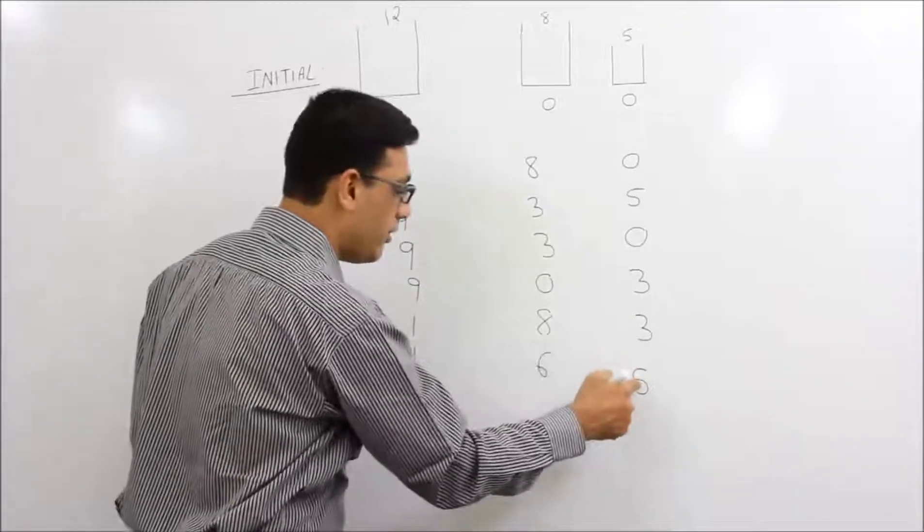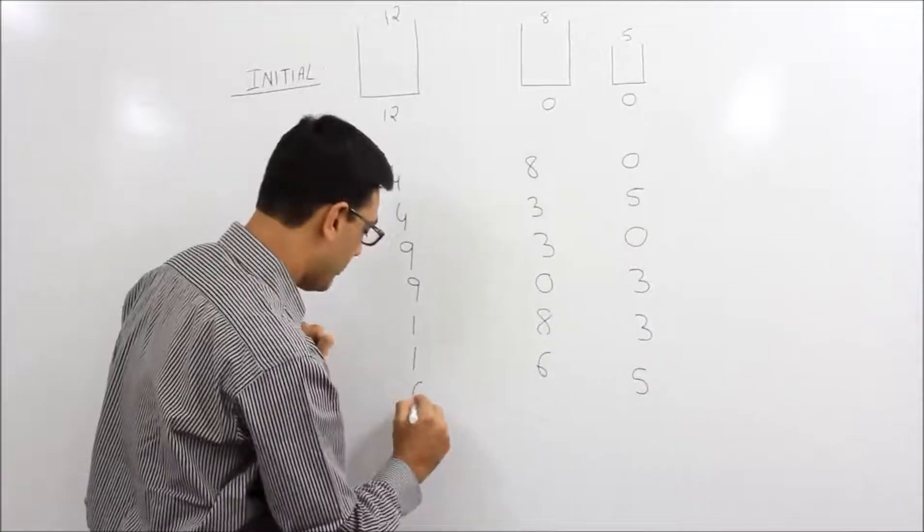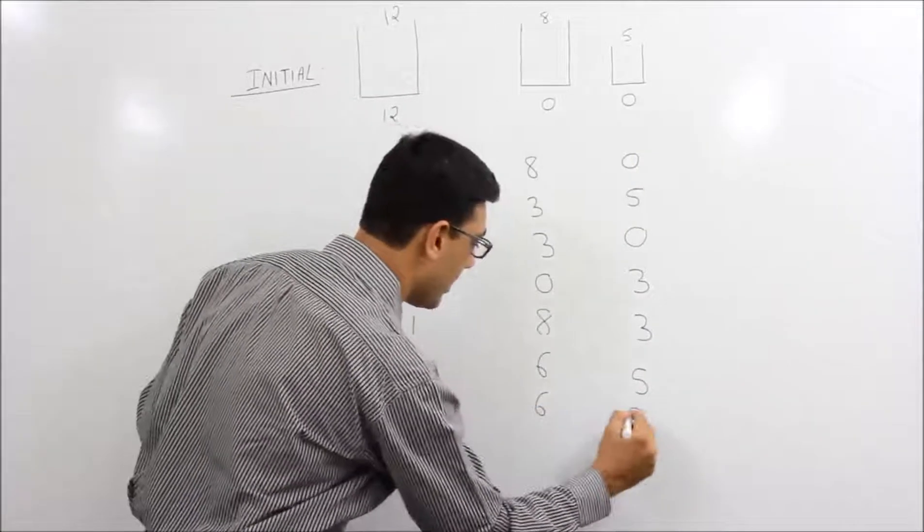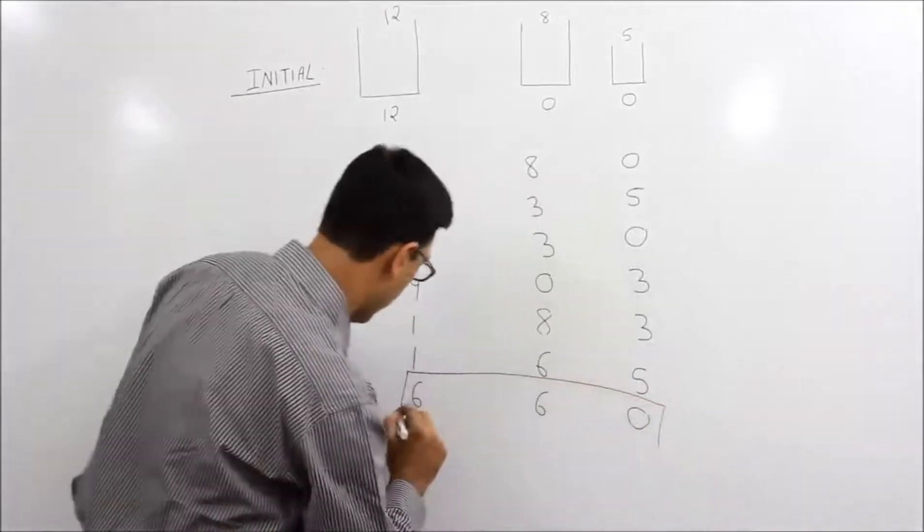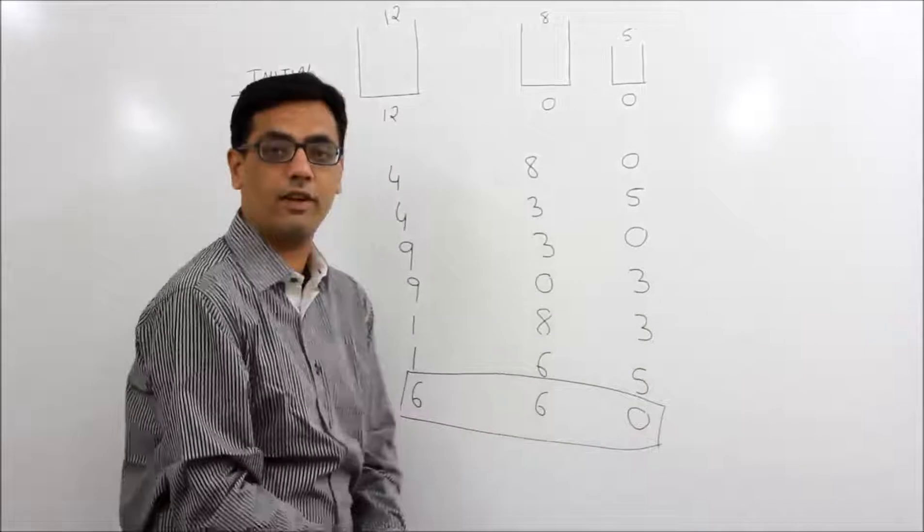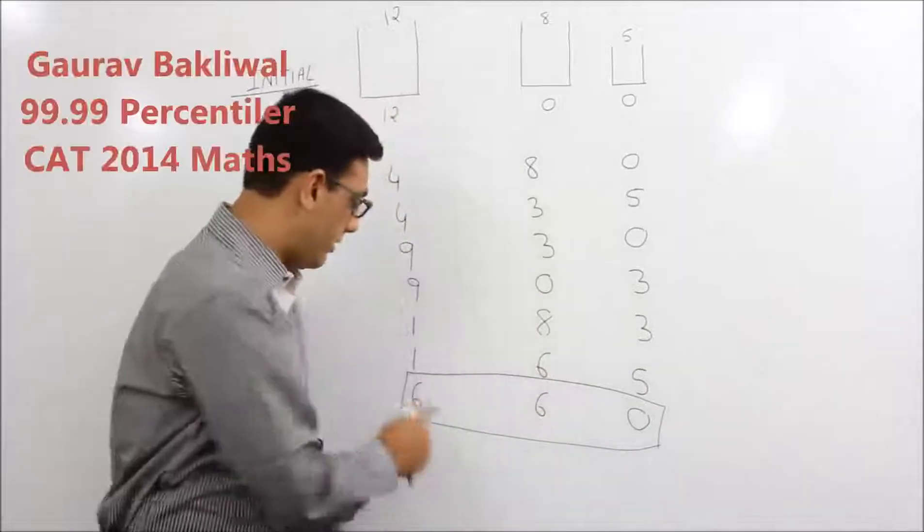And then the final step, we put this 5 litre in the first jar. We get 6, 6 and 0 which is our objective. So after just 6, 7 steps, we have been able to get 6, 6 and 0.